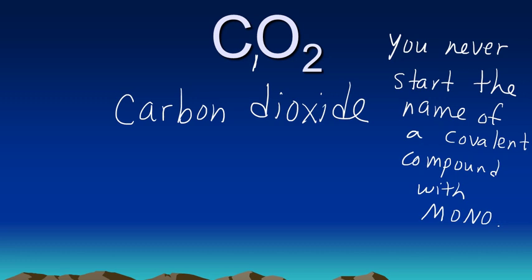So if the first element in a covalent compound has an understood subscript of one, we just leave off the mono. Just pretend it's not there. So it's just carbon dioxide.